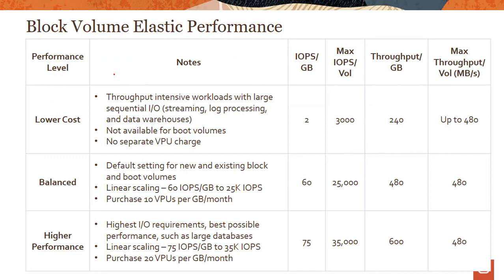A recently introduced feature is performance tiers, characterized by a unit called VPU — Volume Performance Unit. There are three levels: a lower cost tier, a balanced tier, and a higher performance tier. The balanced tier is the default when you create a new block volume or boot volume. It gives you 60 IOPS per GB, up to a maximum of 25,000 IOPS per volume.